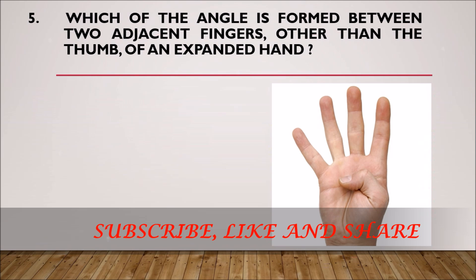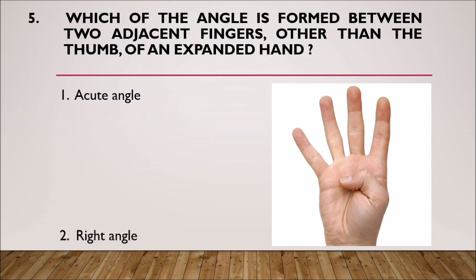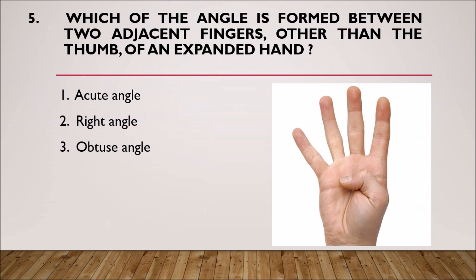Question 5: Which type of angle is formed between the adjacent fingers — other than the thumb — of an expanded hand? Options: acute angle, right angle, obtuse angle, or either acute angle or obtuse angle.